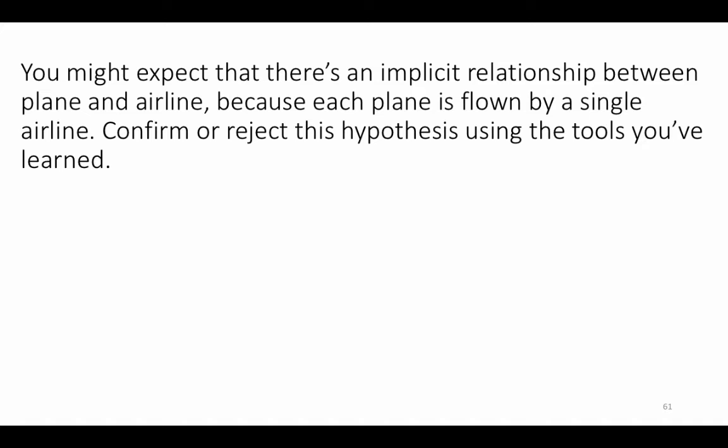You might expect there is an implicit relationship between plane and airline — the planes table tells you which airline the plane belongs to. So you may think that in every flight, a particular plane would be used only by one particular airline. Let's confirm or reject this hypothesis: are there planes which were actually used by more than one airline? That's perfectly possible — for example, a leased airplane.